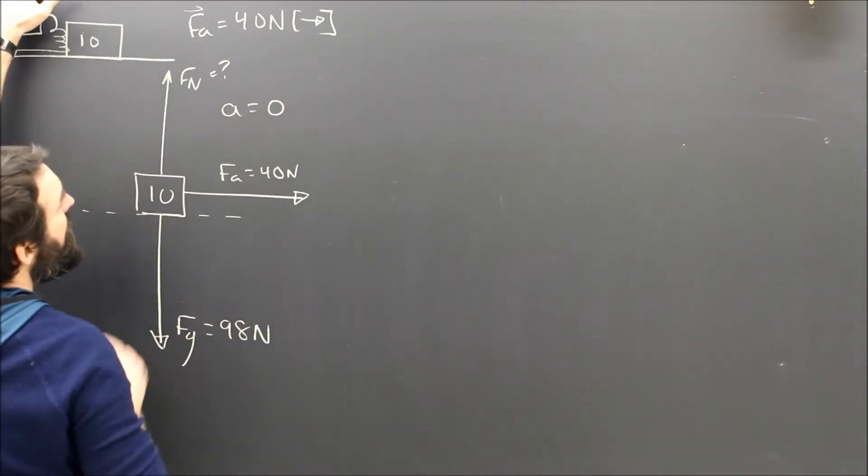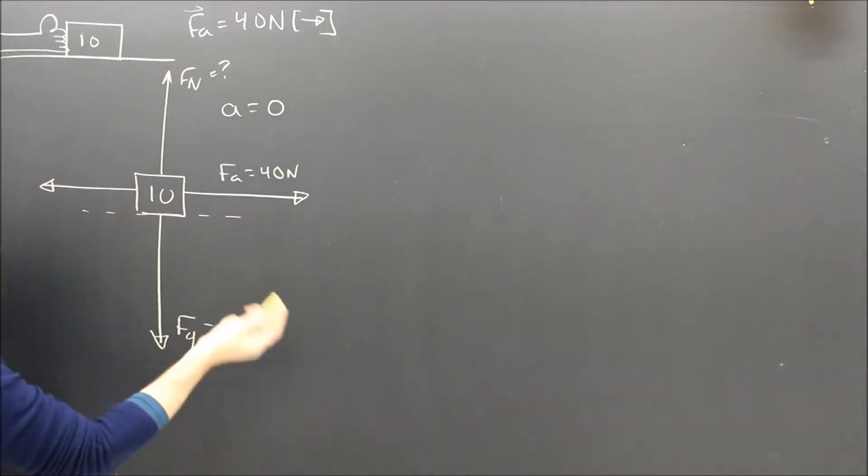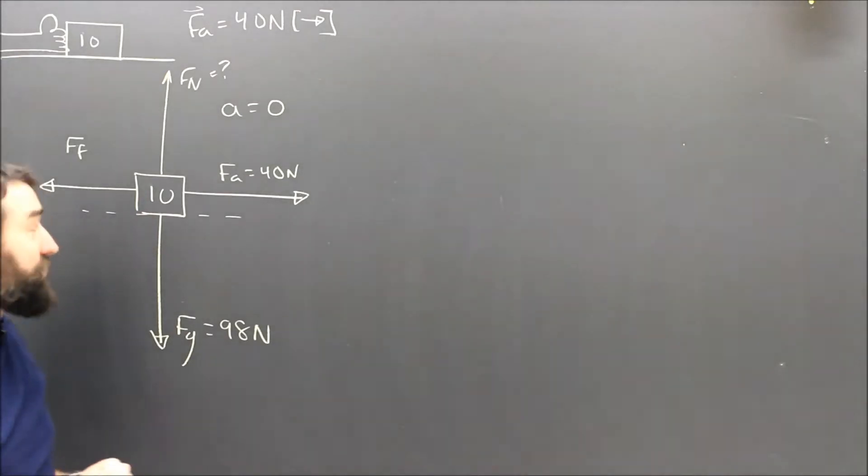Uniform motion. So there's got to be a force this way and it's got to be 40 newtons. And what could be doing it? It's got to be friction because the question didn't say anything else about anyone else pushing on the box.